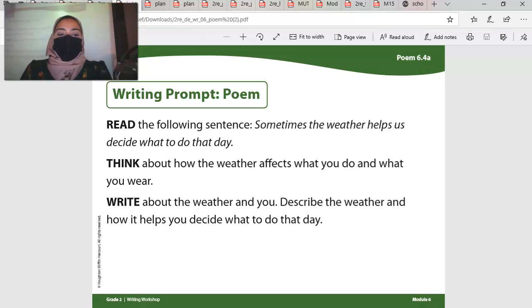All right. So, what we're going to do today is I want you to write about the weather and you. Describe the weather and how it helps you decide what to do that day. So, you're going to describe your favorite weather, whether it's spring, summer, fall, or autumn. Or autumn is fall. Spring, what am I missing? Spring, summer, fall, winter.